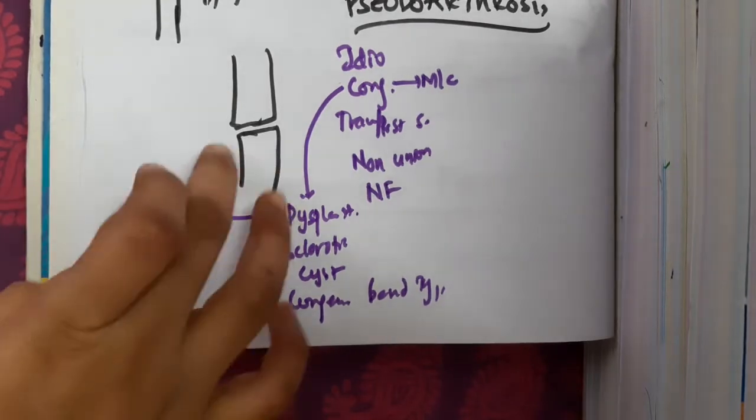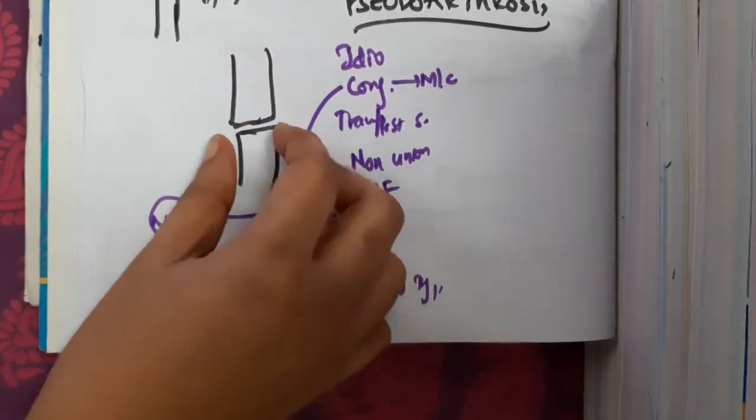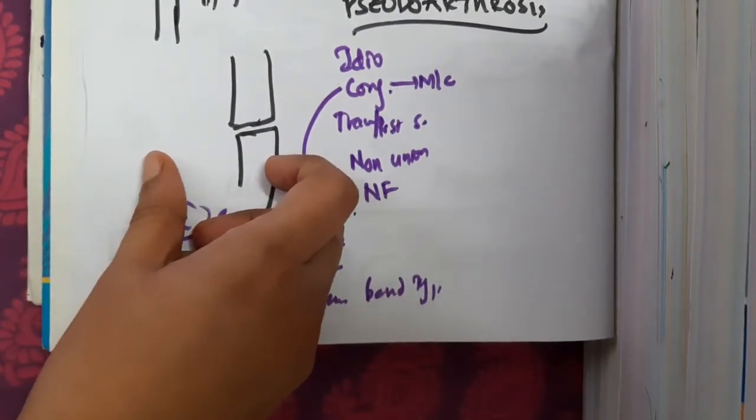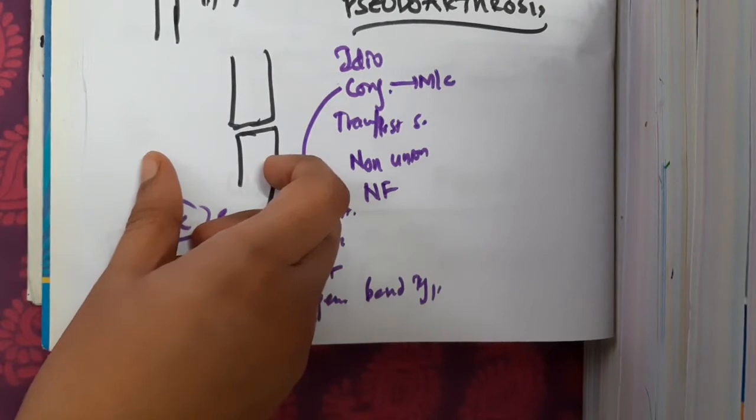Because of this pseudoarthrosis, the bone will be bent, giving the appearance of hourglass constriction.